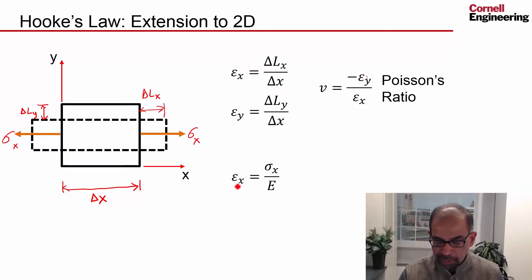And so I know that from the previous discussion, I have the strain in the X direction as given by sigma X over E. So that's the strain in the X direction. And then the corresponding strain in the Y direction now is given by minus nu epsilon X. So it's just a fraction of that, and it's going to be opposite in sign to the original strain in the X direction.